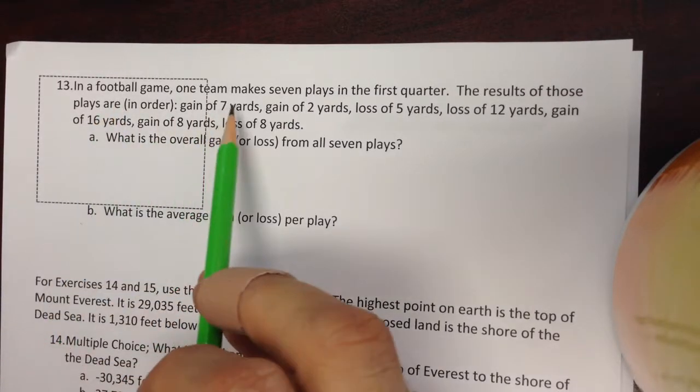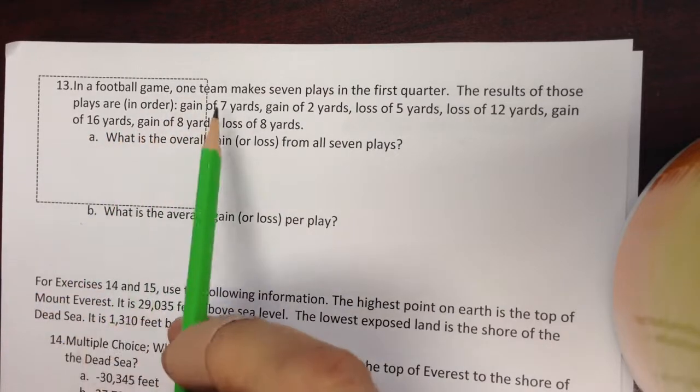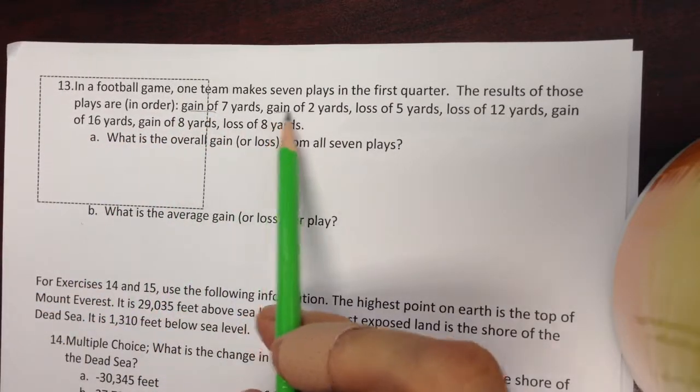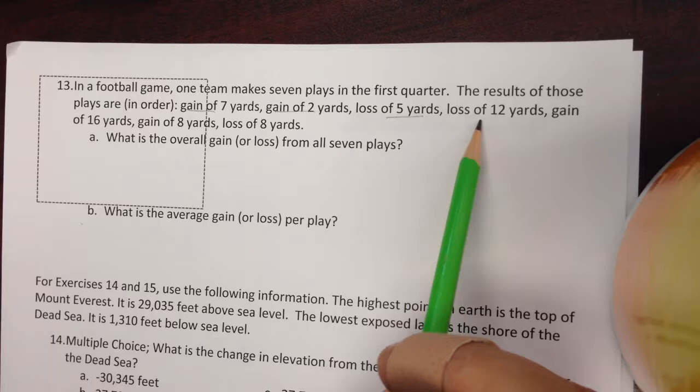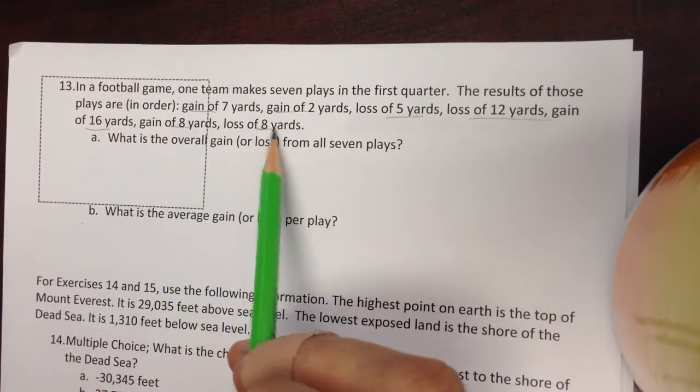Okay, here, in a football game, one team makes seven plays in the first quarter. The result of these plays are in order: gain of seven, gain of two, loss of five, loss of twelve, gain of sixteen, gain of eight, loss of eight.